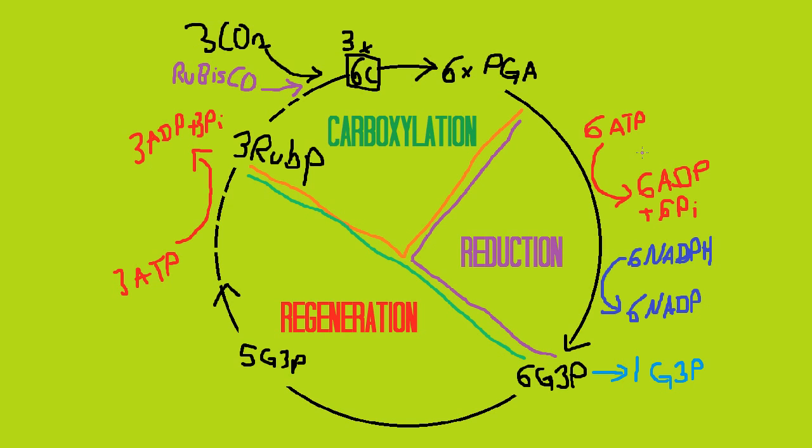This is the summary of the light-independent reaction in photosynthesis. Here is the CO2 that goes into the system, and the rubisco that carboxylates the ribulose bisphosphate. The main difference between this diagram and my previous diagrams is that this has all the stoichiometry for the actual equation for photosynthesis.